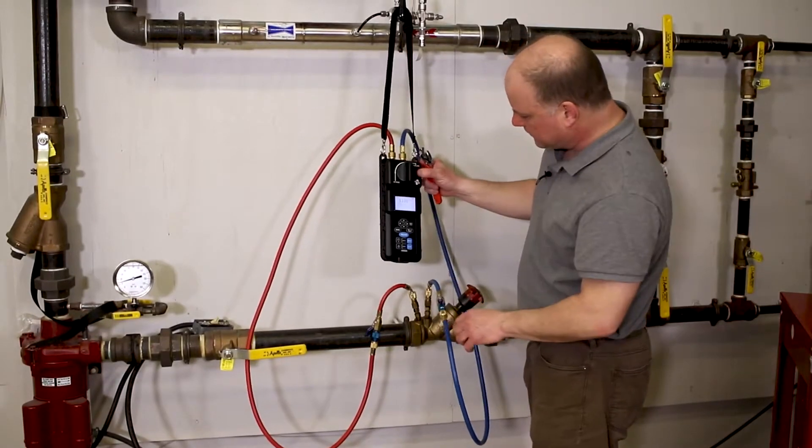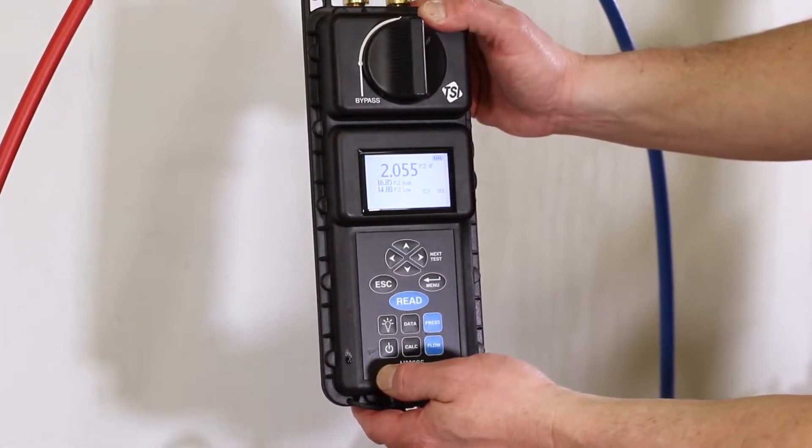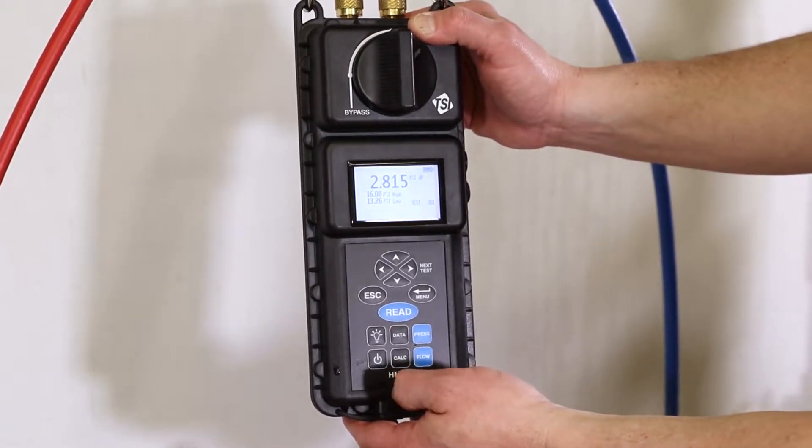Turn the valves to the measure position, and what we're going to be seeing on the display right now is the differential pressure, the high side, and the low side pressure simultaneously.